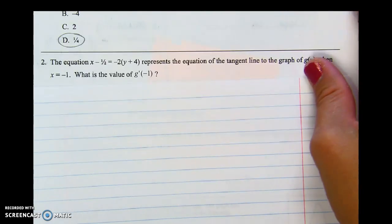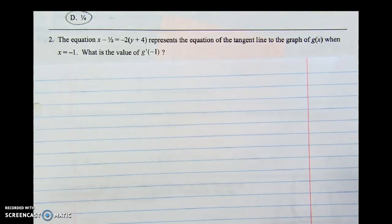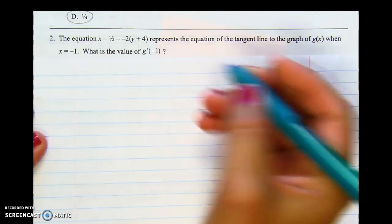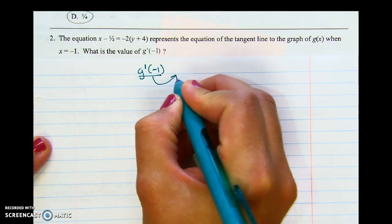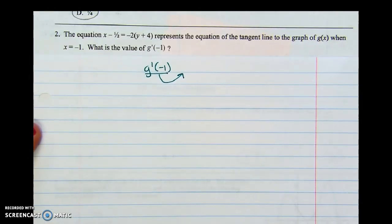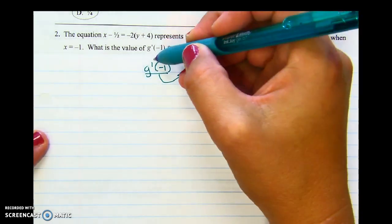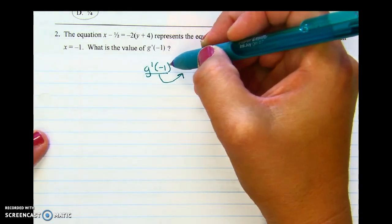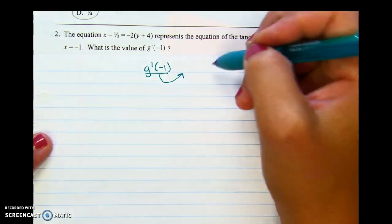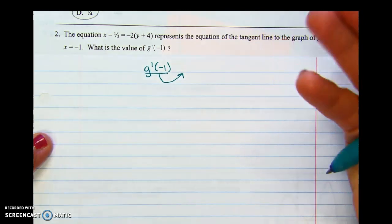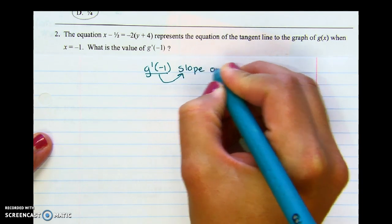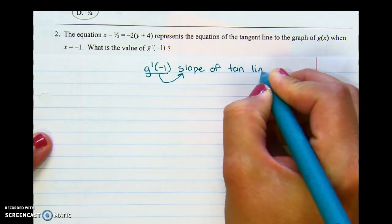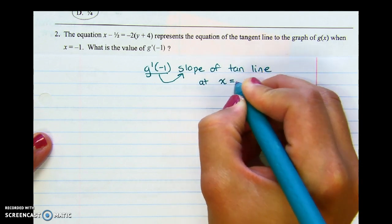So what is the value of g prime of negative one? What you need to have memorized, or you need to annotate your question. So underline g prime of negative one, you need to know what that means. You need to know exactly what that means. We know the prime means derivative, and we know we've plugged a number into a derivative. So when you plug a number into the derivative, what do you get? What plops out? Oh my goodness. Slope of tangent line at x equals negative one. Very good.